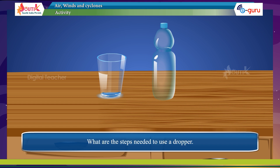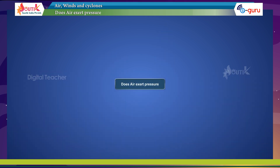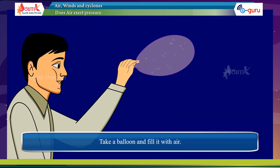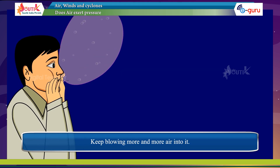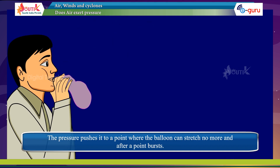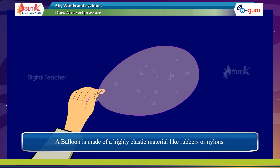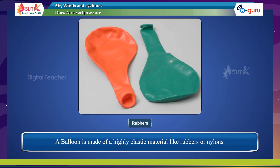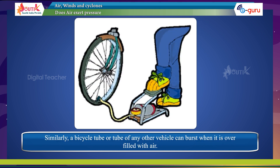What are the steps needed to use a dropper? Explain its functioning. Does air exert pressure? Take a balloon and fill it with air. Keep blowing more and more air into it — the balloon expands as we increase pressure. The pressure pushes it to a point where the balloon can stretch no more and it bursts. A balloon is made of a highly elastic material like rubber or nylon.